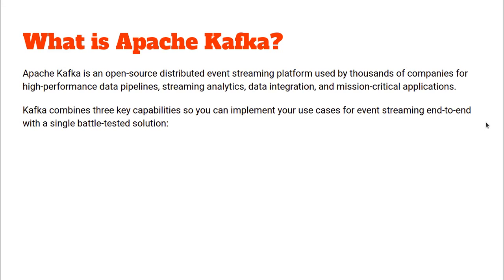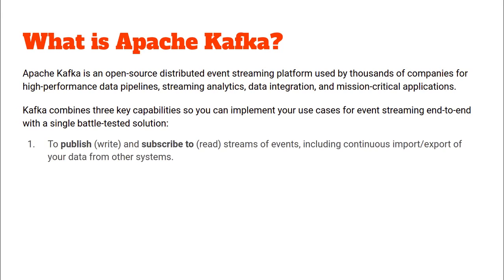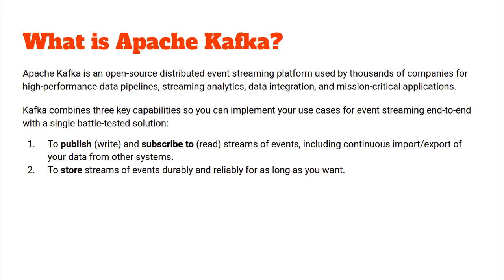Apache Kafka combines three very important key capabilities for us. First, Apache Kafka allows us to write a stream of events into it and also read that stream of events from it, following a publish-subscribe kind of mechanism. Second, Apache Kafka allows us to store the stream of events durably and reliably for as long as we want. Third, Apache Kafka can allow us to process these streams of events as they occur in real time or retrospectively.